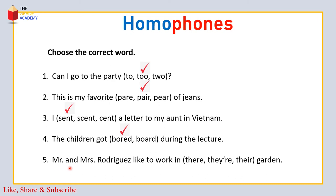Number 5: 'Mr. and Mrs. Rodriguez like to work in their garden।' यहाँ there, their, they're तीनों words homophones हैं — sounds इनकी same हैं लेकिन meanings और spellings different हैं। Correct homophone जो हम यहाँ use करेंगे वो है T-H-E-I-R, their — Mr. and Mrs. Rodriguez अपने बाग में काम करना पसंद करते हैं।